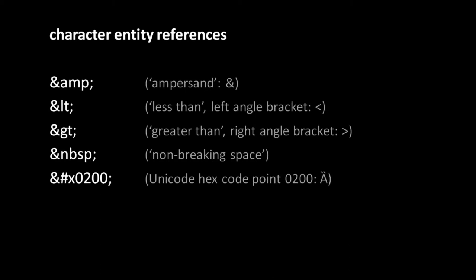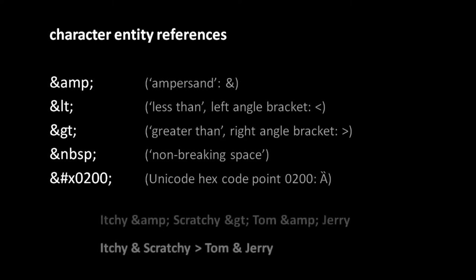For example, if in the content of a tag you wish to write "itchy & scratchy > Tom & Jerry," you have to write: itchy &amp; scratchy &gt; Tom &amp; Jerry. Those three are certainly the most common character entity references you'll see, except maybe &nbsp; which stands for non-breaking space — generally used as a kludge for including an extra space in your text.